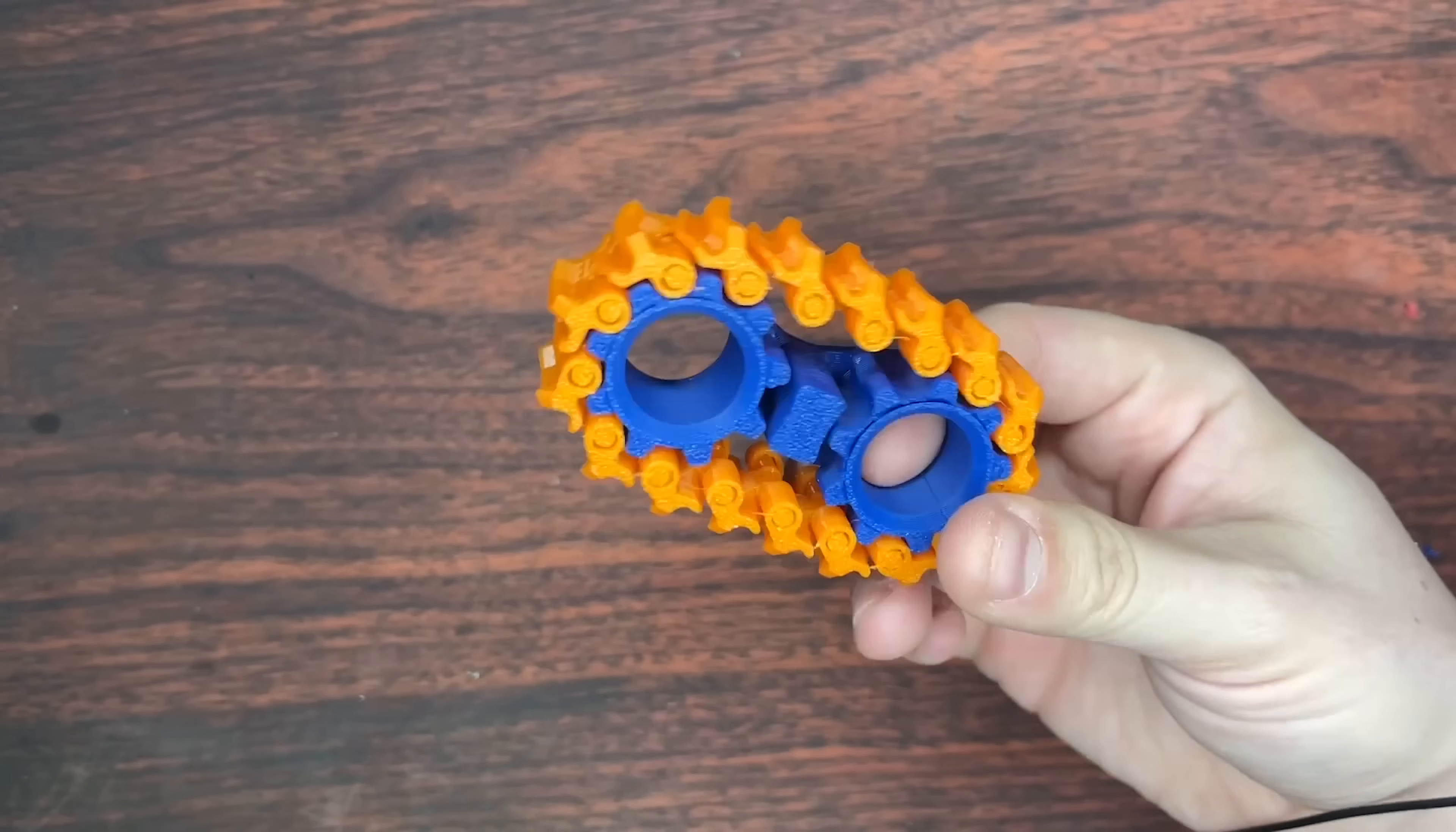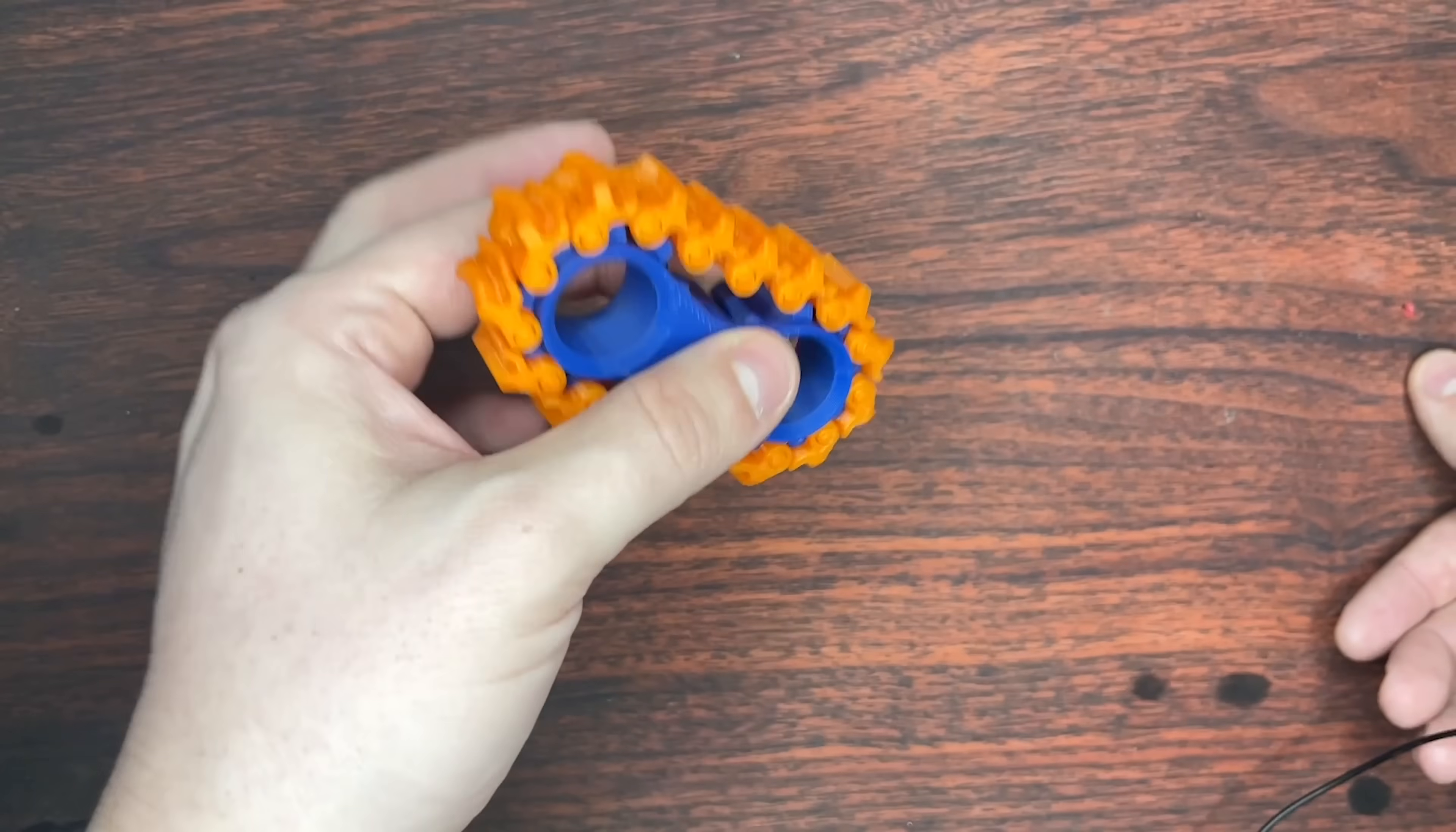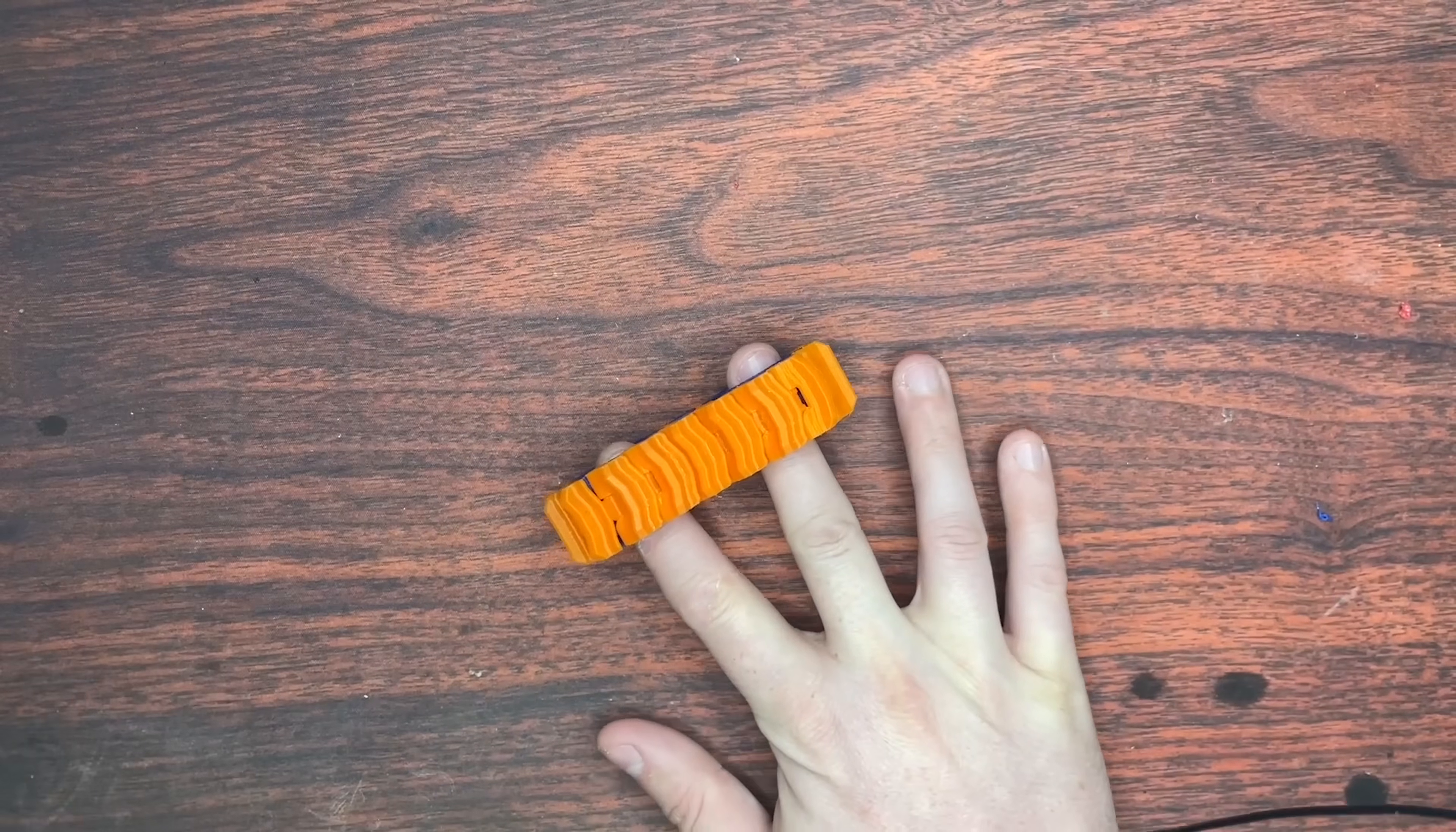But what on earth would you 3D print besides these marvelous fidget spinners? Well, believe it or not, you can actually print useful things that improve your daily life, and you can make as specific a thing as you need, because Amazon don't got everything, they got most things, let's be real, but you can print a lot of stuff that can actually fit really specifically into your life that just doesn't exist otherwise. So here is a list of 10 of those things that I use in my everyday life that make my life better, and hopefully they can make your life better as well, but no promises, you really just need therapy.